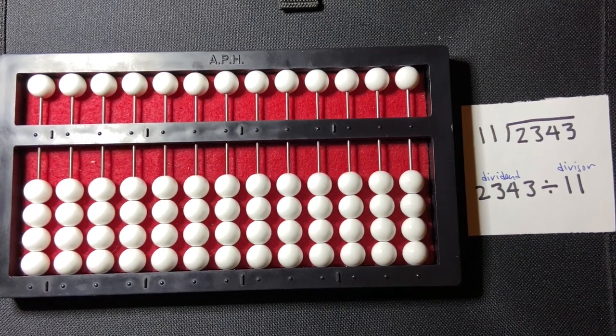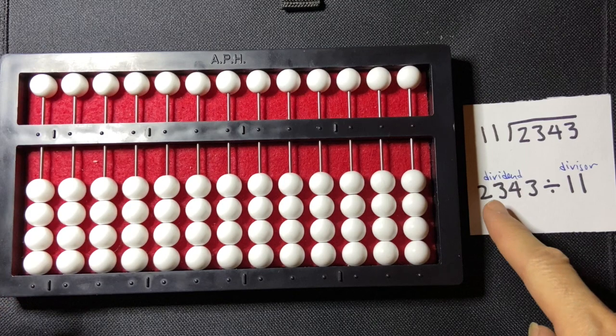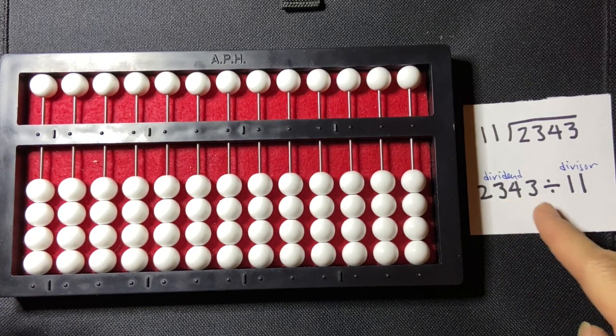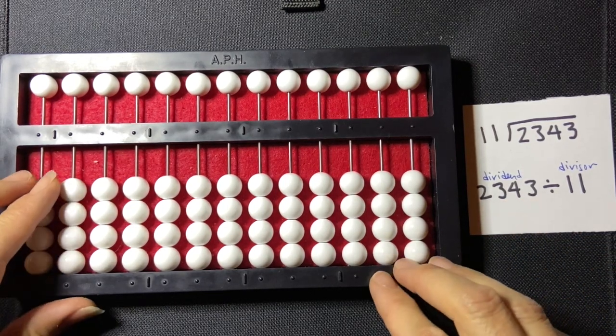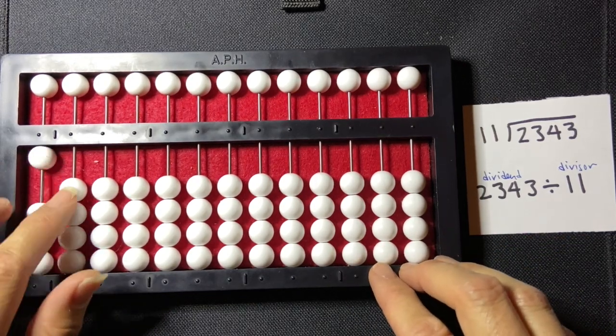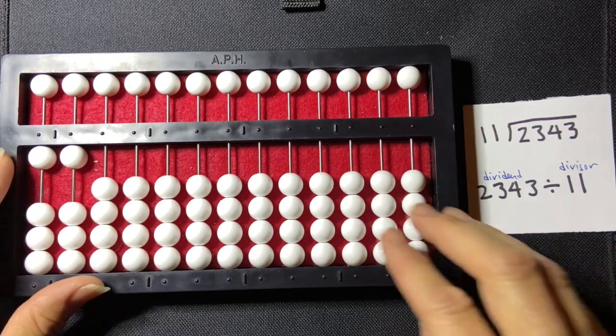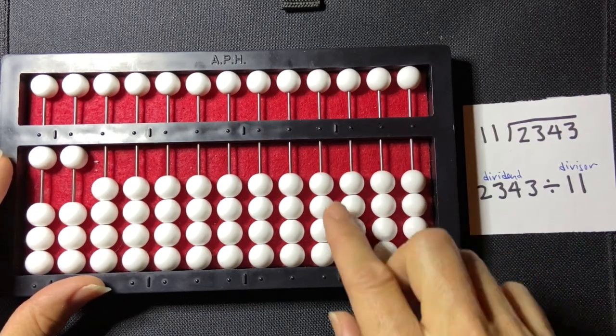Okay, we're going to be using the counting method to divide 2,343 divided by 11. So I'm going to set my divisor, which is 11, on the far left-hand side of my abacus, and it's a 1 and a 1. And I'm going to set my dividend,